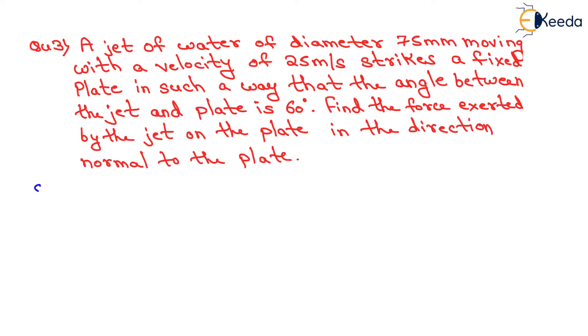Now in the question diameter is already given, that is 75 mm. So we will convert this diameter in terms of meter, that is 0.075 meter. Now we know the value of cross sectional area which will be equals to pi by 4 into diameter square, and diameter is already calculated above, that is 0.075 meter. So after solving this we will have the cross sectional area of the nozzle equals to 0.004417 meter square.